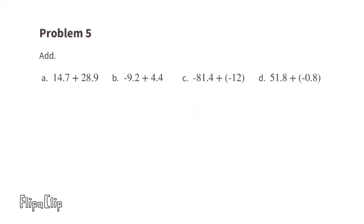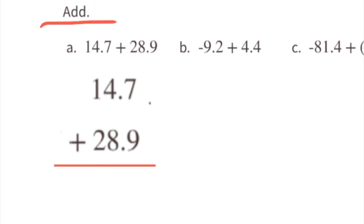Problem number five, Part A: add 14 and 7 tenths plus 28 and 9 tenths. 7 plus 9 equals 16 — carry the 1 and bring down the decimal. 1 plus 4 plus 8 is 13 — carry the 1. 1 plus 1 plus 2 is 4. The answer is 43.6, or 43 and 6 tenths.